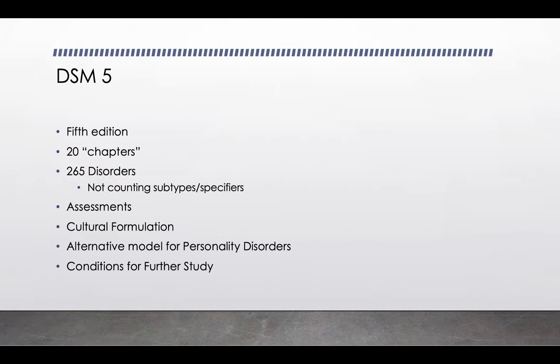In its fifth edition, the DSM has 20 chapters — or sections. We have neurodevelopmental disorders, schizophrenia disorders, depression, bipolar, things like that. It has 265 disorders, not counting all the different subtypes. For example, there's anorexia binge-purge type and anorexia restrictive eating type. So we have all these different combinations — these specifiers.